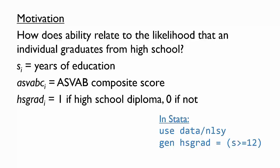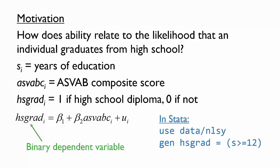With this new variable, we could estimate a model where high school graduation is the dependent variable and ability is the independent variable. We have studied models with binary variables before. When a binary variable, such as one describing gender or race, was used as an independent variable, we called it a dummy variable or an indicator variable. Now the binary variable is the dependent variable. It is fine to do this, but we'll have to think carefully about how to interpret the model's results.